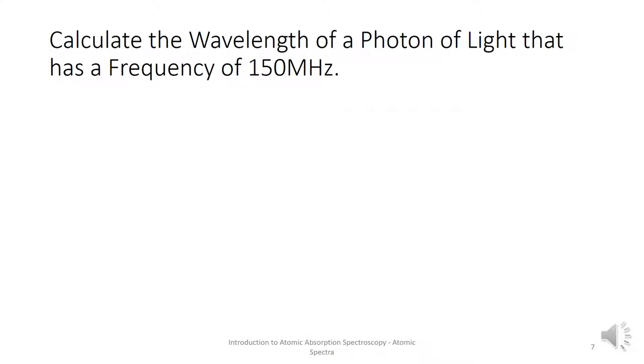Calculate the wavelength of a photon of light that has a frequency of 150 megahertz. So if we rearrange our equation, we find that lambda equals C over F. And if we put in our values, we find that lambda equals 2 meters.